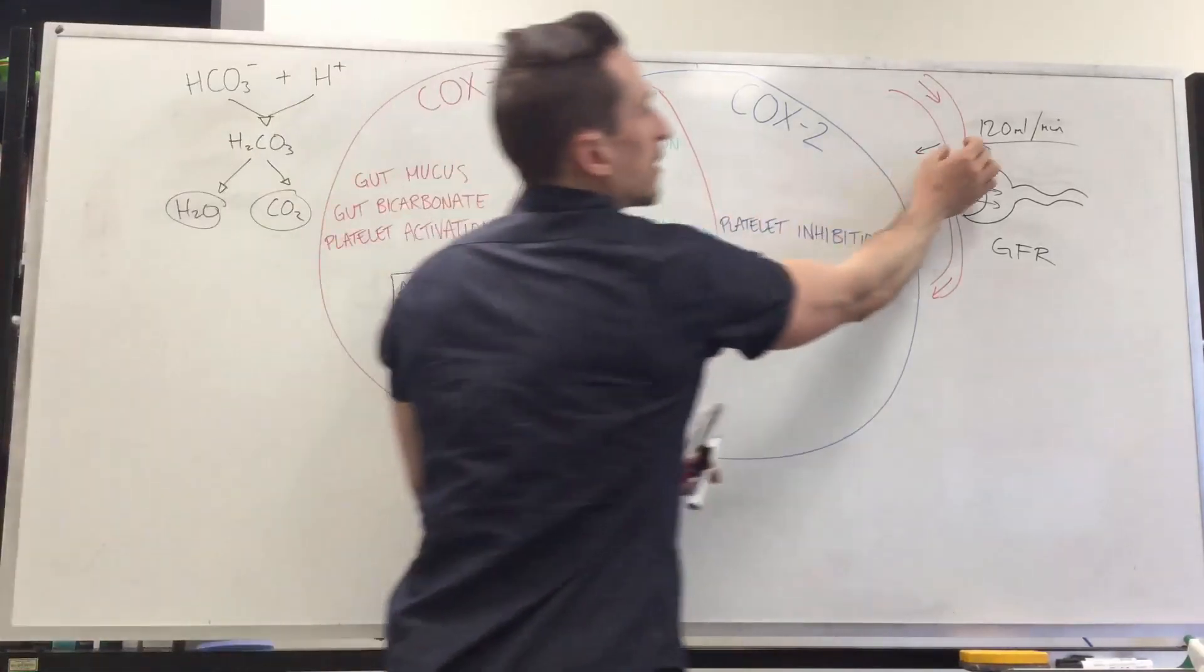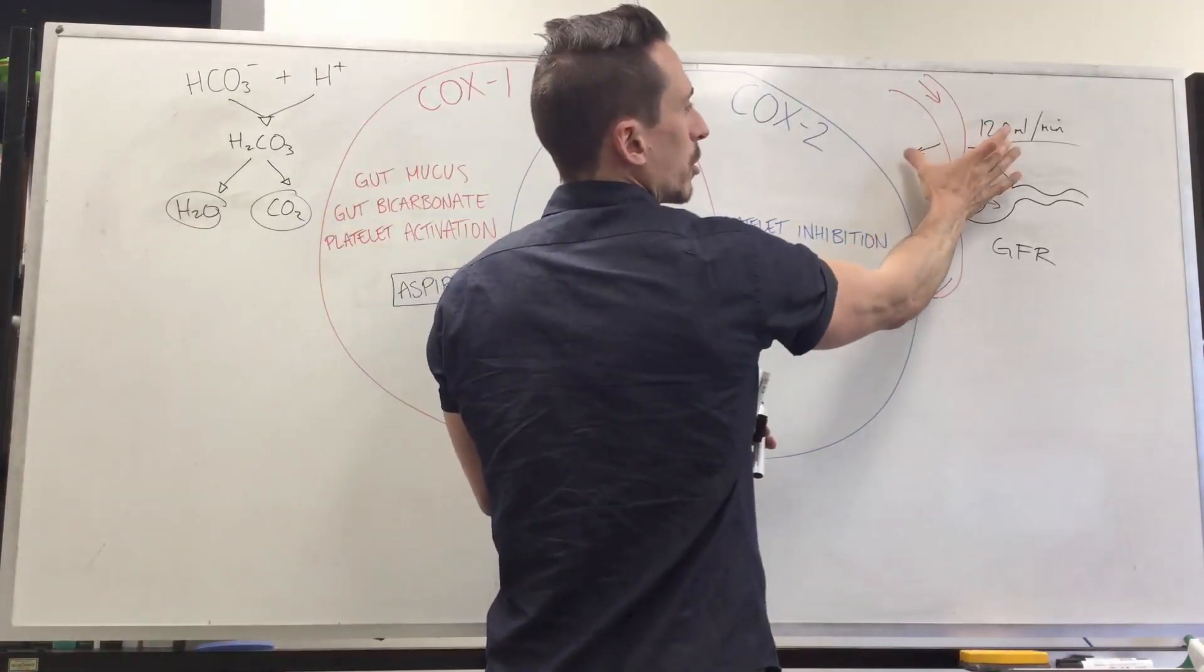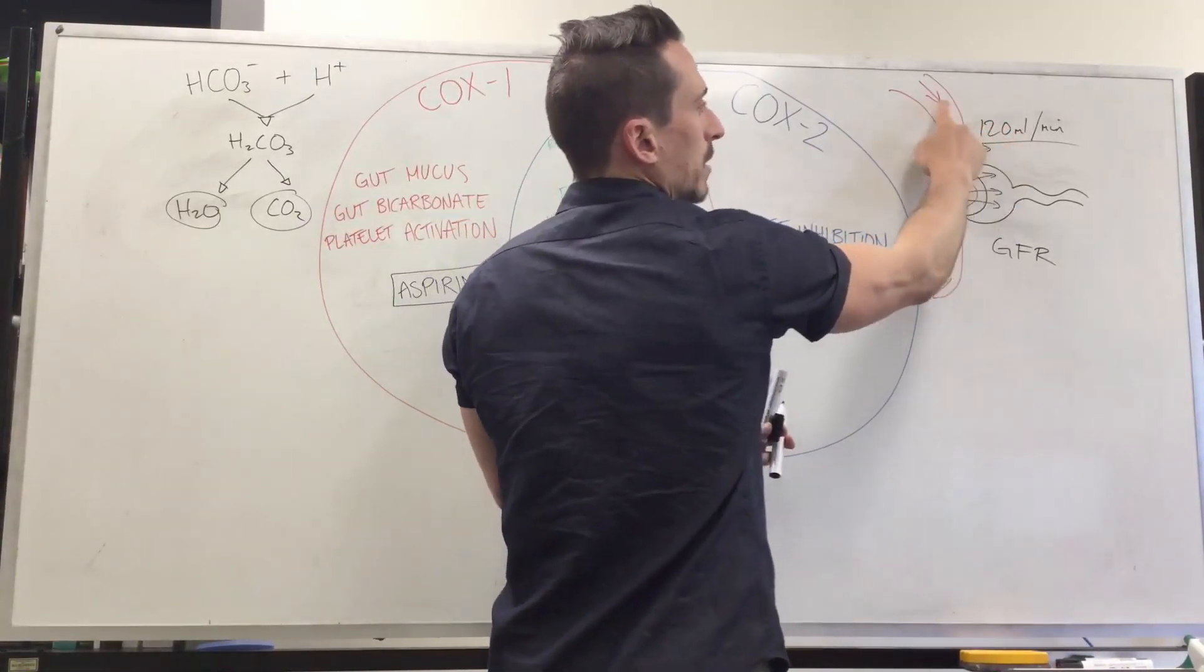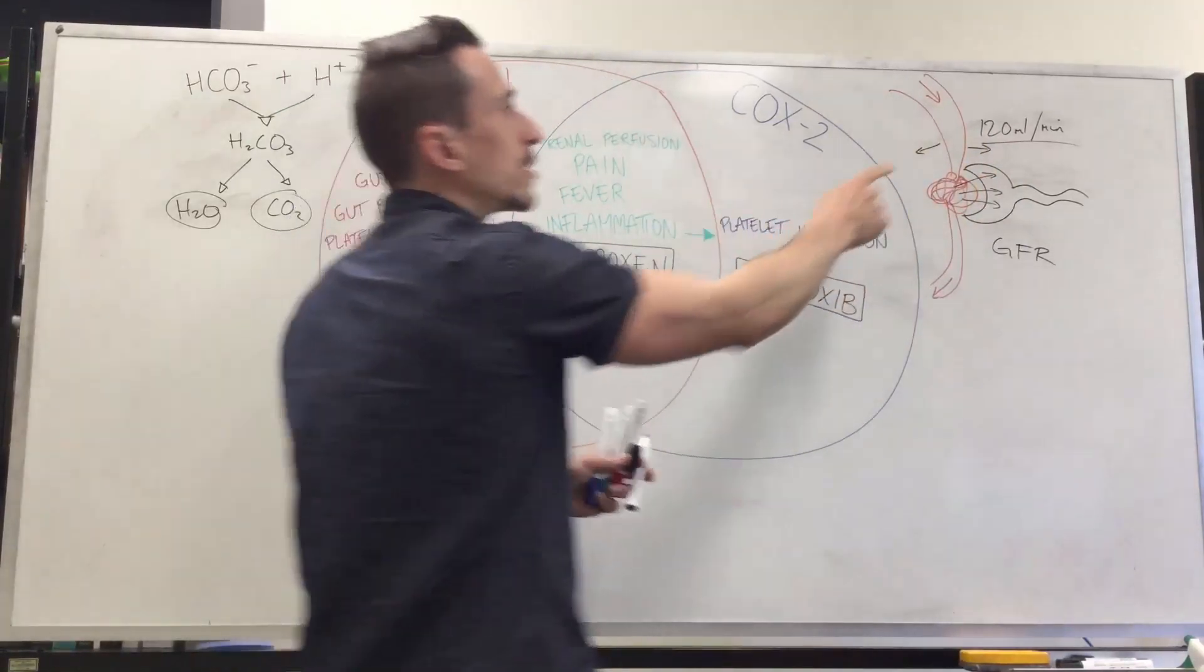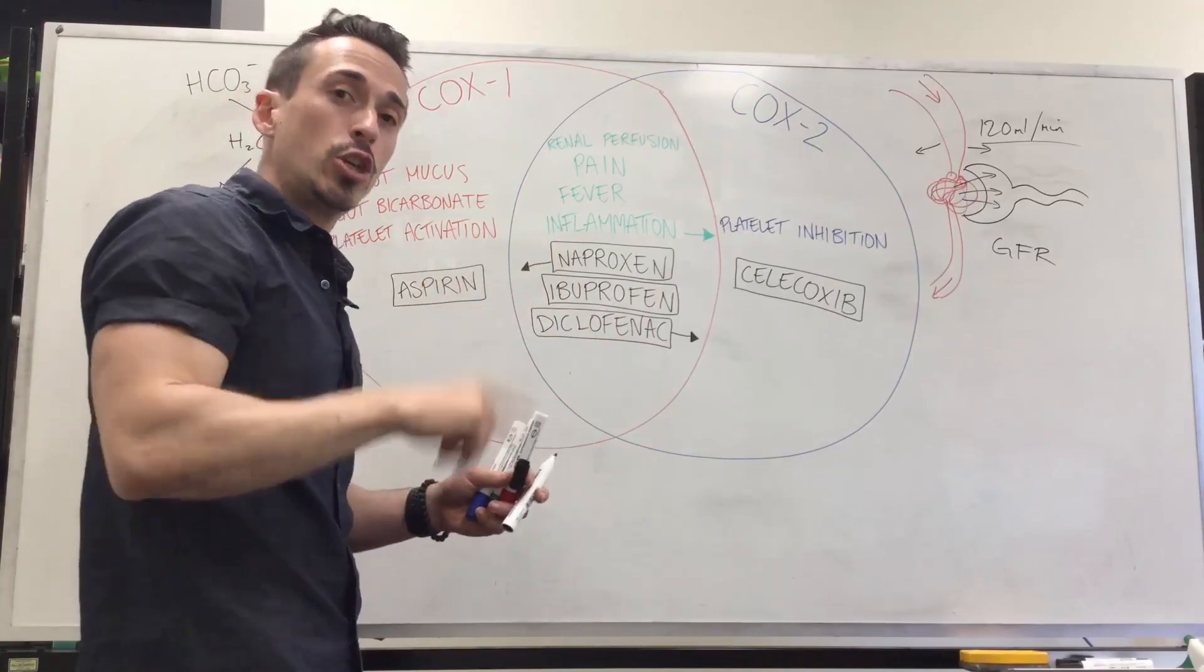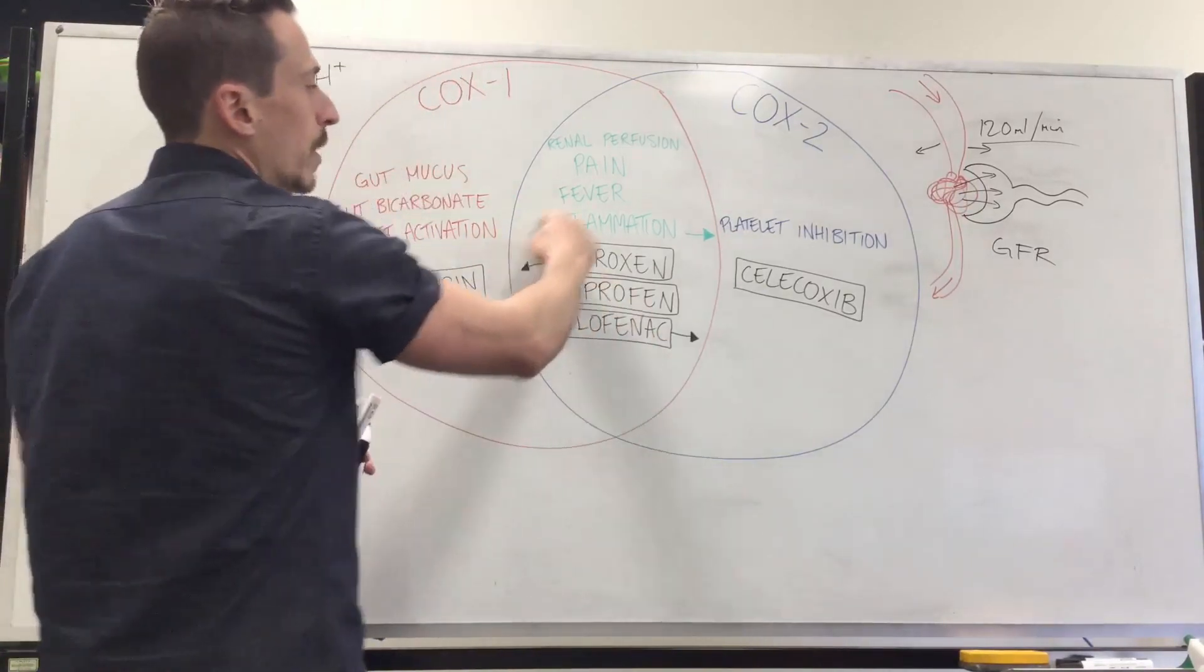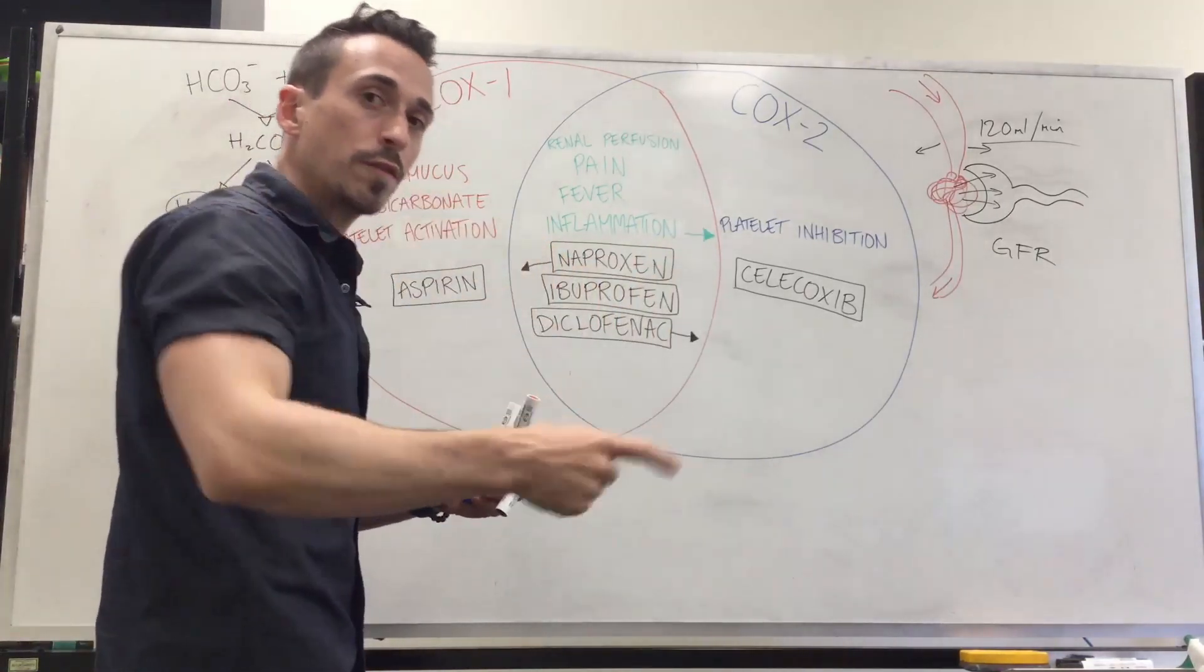But the problem is they also alter renal perfusion. If they inhibit the prostaglandins that dilate the afferent arteriole, this can result in constriction of the afferent arteriole and drop down the glomerular filtration rate. If this drops down, you're not filtering enough of the stuff out of your blood. This can result in acute renal disease. This is not a good thing. So this is when these types of drugs are taken too often or abused.